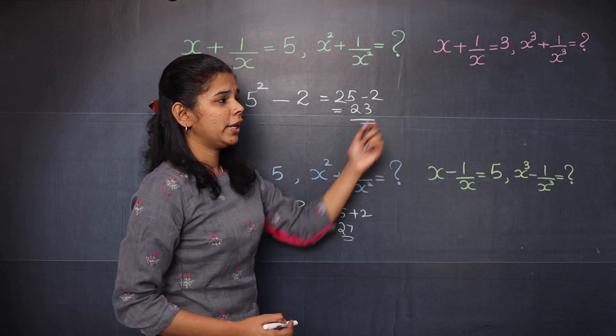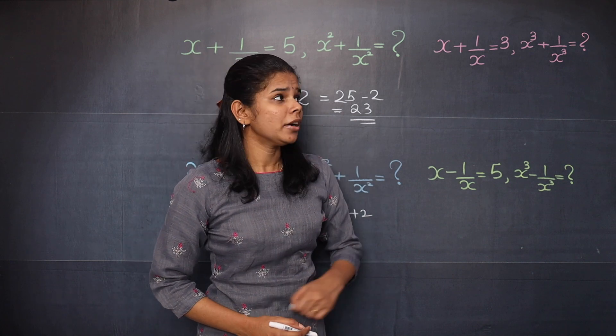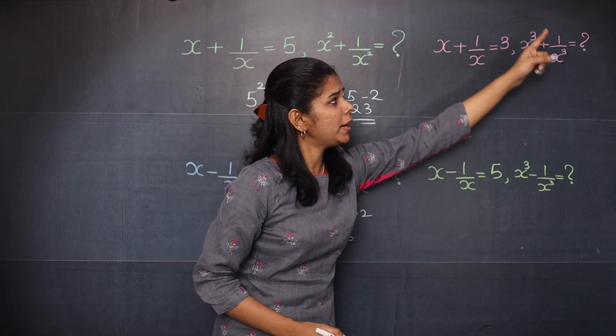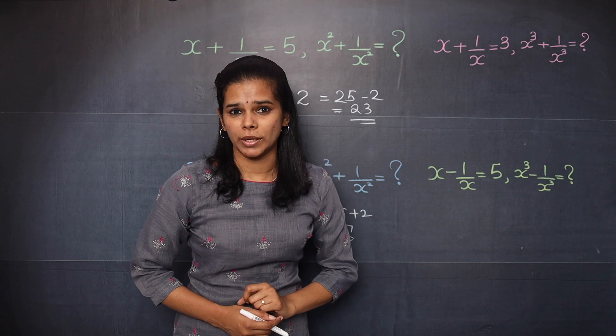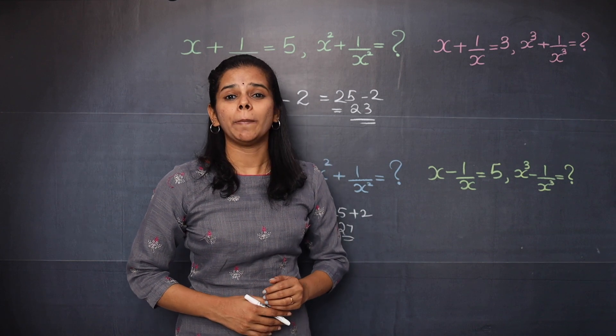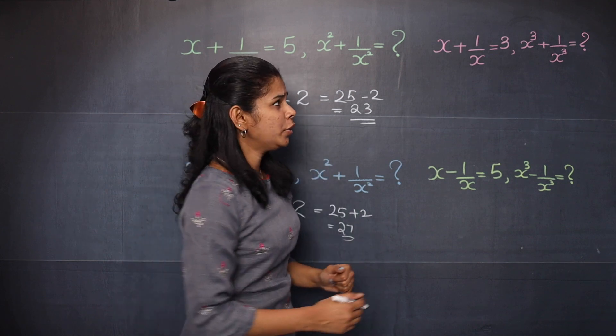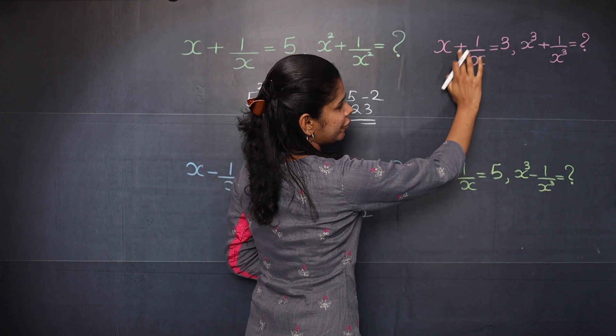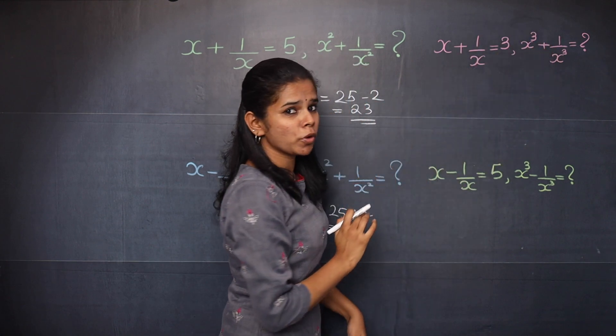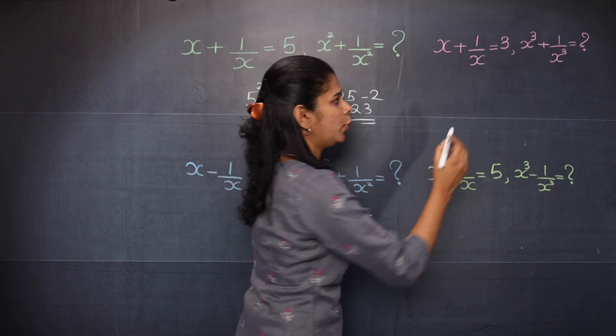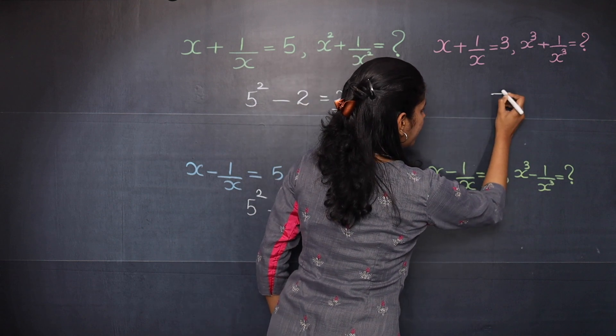Now moving on to the next question. Here you have x cube plus 1 by x cube as the question. So you need to apply a new trick. Here you need to first identify the sign. Here you have two positive signs, so in the answer you will have to apply minus.